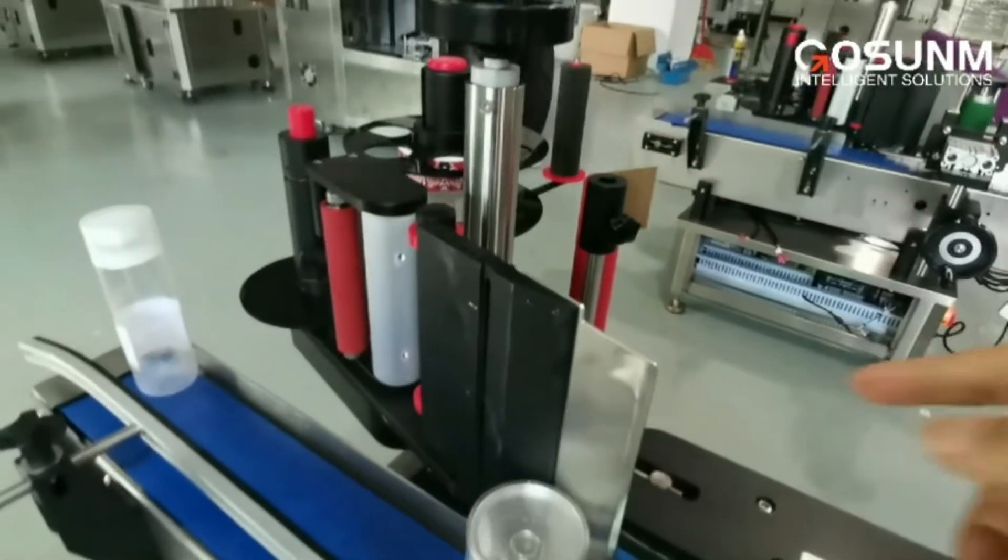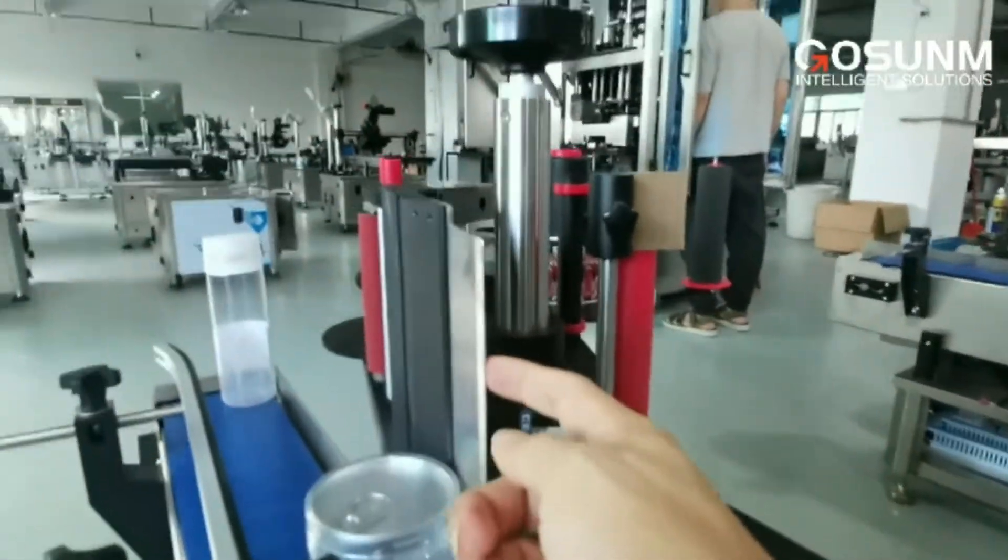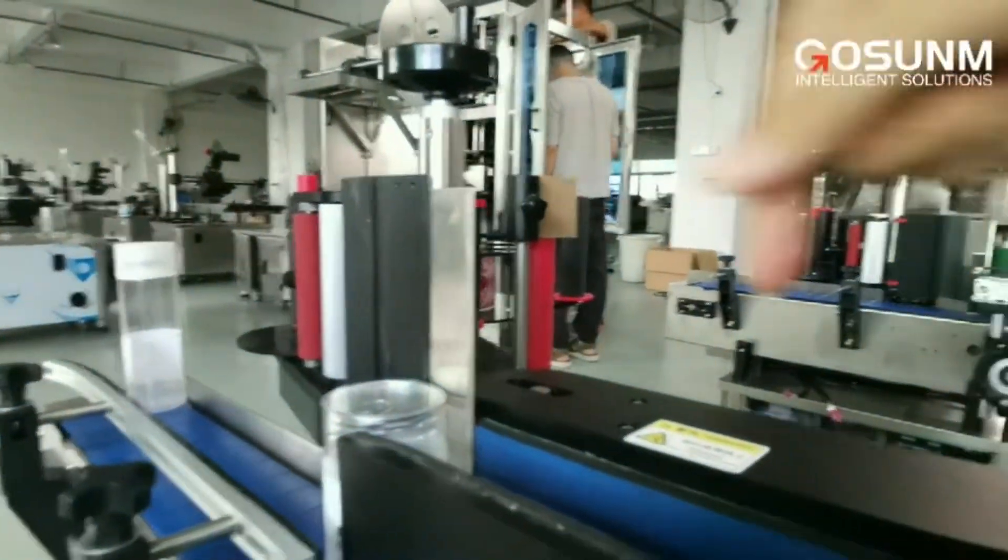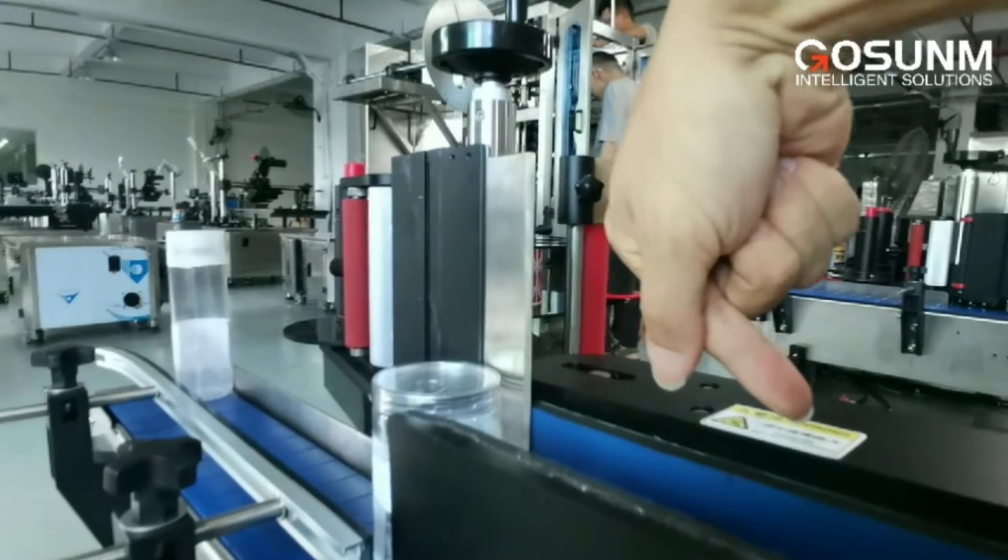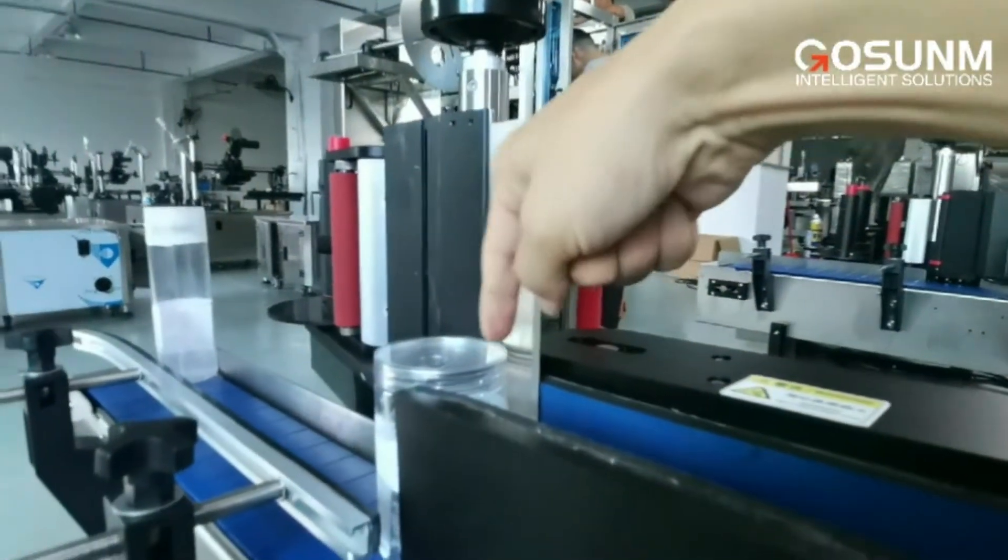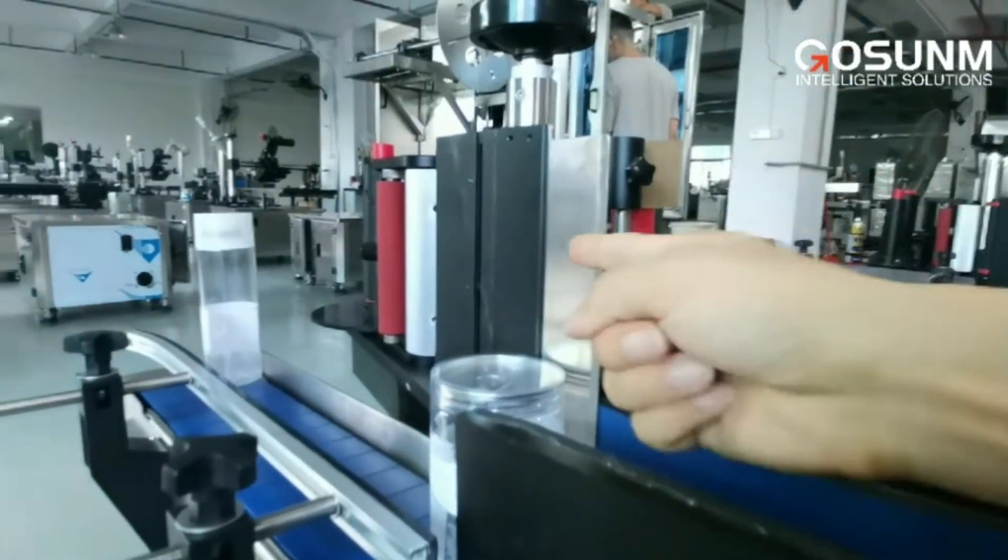When the label comes out of this edge here, the label will move forward right this way and will be applied around the bottle. And then the label will go in this direction.